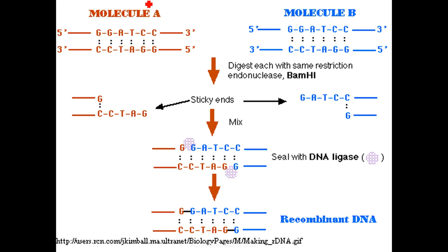Here's how recombinant DNA actually works. Molecule A is the DNA coming from one individual or species, and molecule B is the DNA coming from a completely different individual or species. What you need to do first is take the DNA and cut them with exactly the same restriction enzyme. The restriction enzyme shown here is BamHI, which identifies the specific sequence GGATCC and makes a staggered cut between the two G's.